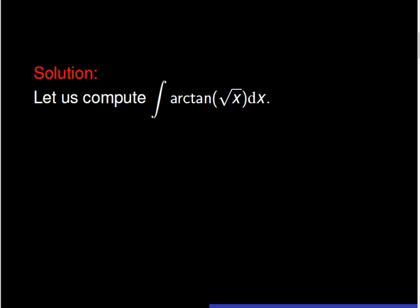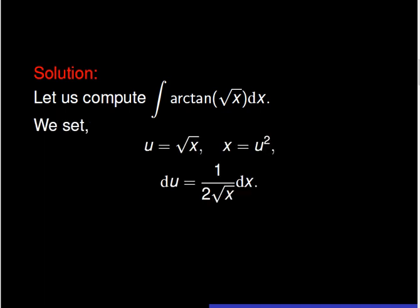This implies that we should first start with the u-substitution method. It is evident that the natural choice for the parameter u should be the inner function. Thus, u should be the square root of x. We set u equal to the square root of x, then du equal to the fraction 1 over 2 times the square root of x. Moreover, it is worth noting that x equals u squared.